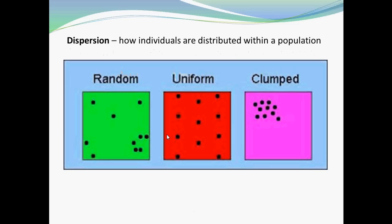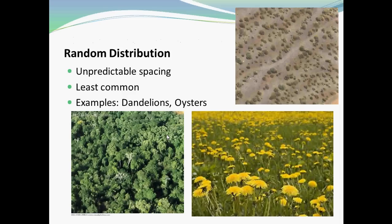Then there's dispersion — how are individuals distributed within a population? There are three kinds: random, uniform, and clumped. Random distribution is unpredictable spacing and is the least common. Good examples are dandelions or oysters. When dandelions go to seed, the wind blows them and there's no rhyme or reason to where the seeds fall and where the organism takes root. Similarly, oysters are lifted and scattered by ocean currents with no pattern to where they land.